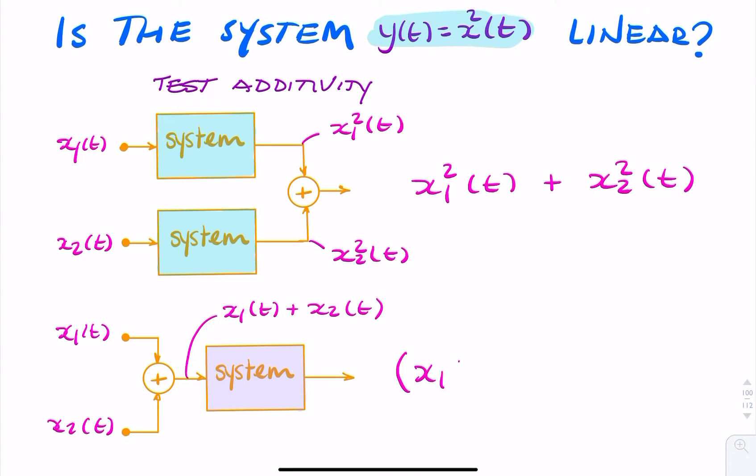So it'll be x1 of t plus x2 of t squared.